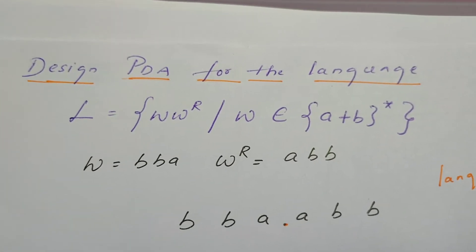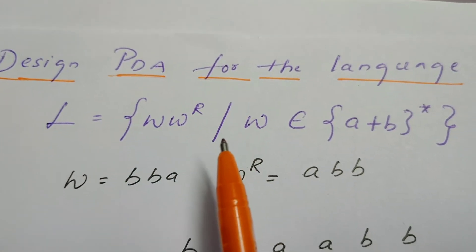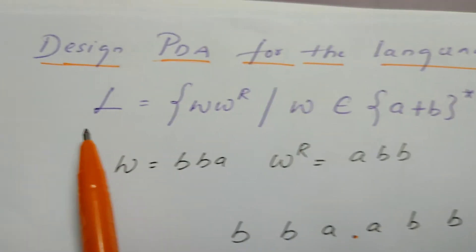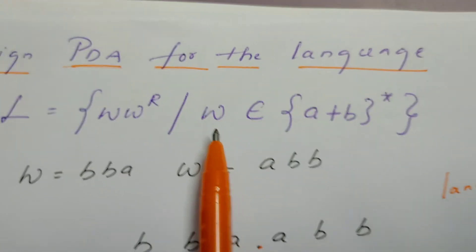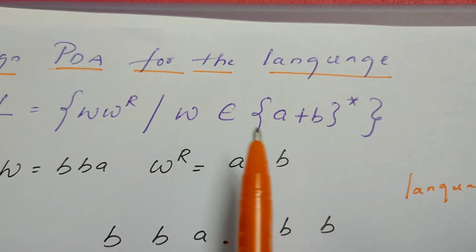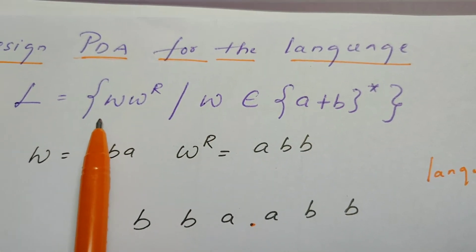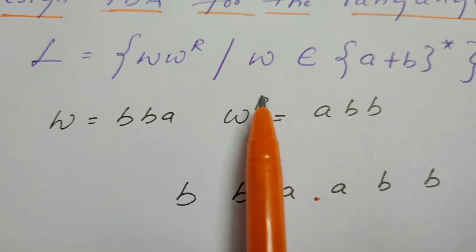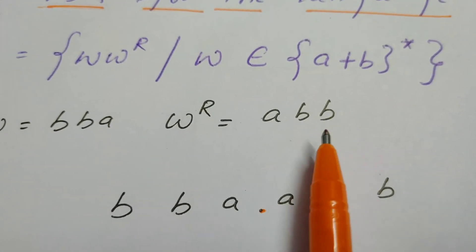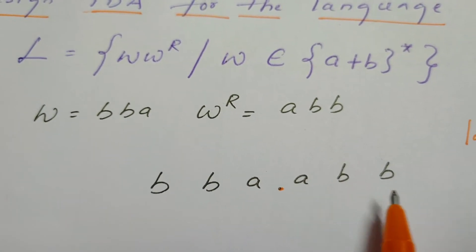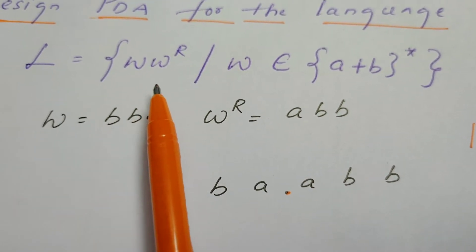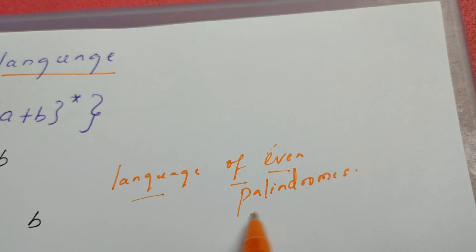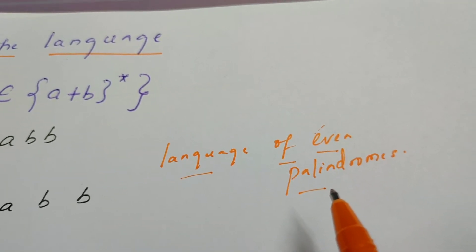In this video, let us see another design problem of pushdown automata. The given language is WW^R, such that W belongs to {A, B}* — W is a string made up of alphabets A and B. The pattern the language describes is WW^R, so if W is BBA, then W^R is ABB, making BBA ABB together. Analyzing the strings, they are even palindromes, so this is a language of even palindromes.